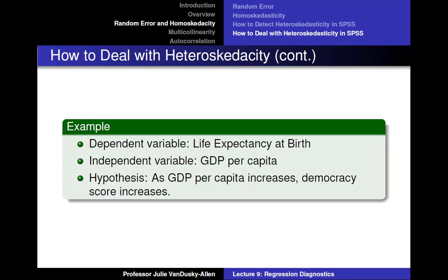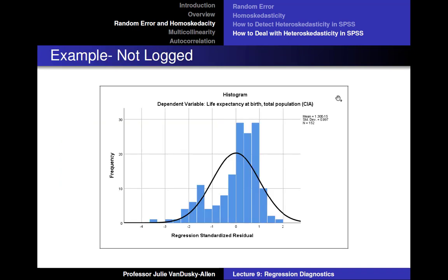Imagine I ran a model with life expectancy at birth as the dependent variable and GDP per capita as the independent variable. I expect GDP per capita to have a positive effect on life expectancy at birth. I run the regression without logging GDP per capita. Here's the histogram of the standardized errors of that regression — as you can see, the standardized errors are not normally distributed around 0.